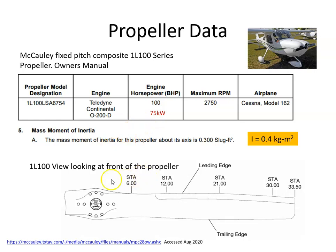We begin by showing data sheets. I went on to the McCauley website and found a data sheet for the 1L100, which is a fixed pitch composite propeller, two blades.